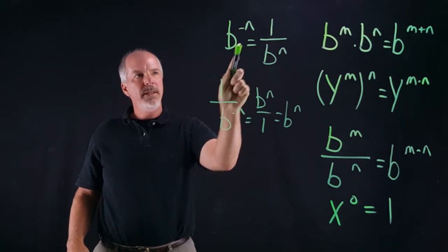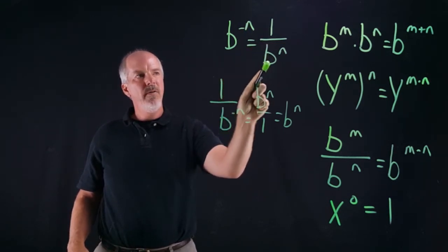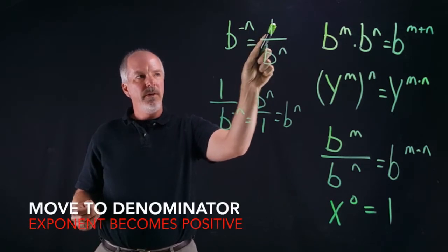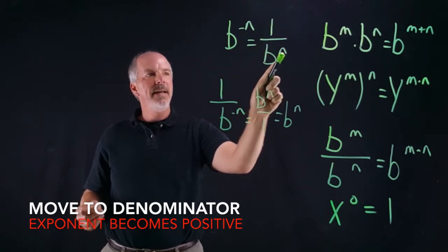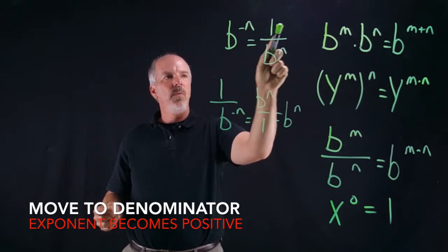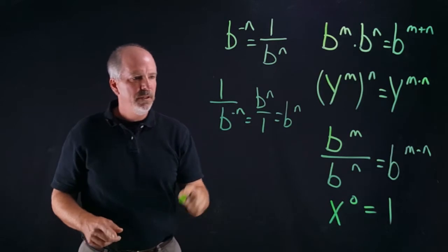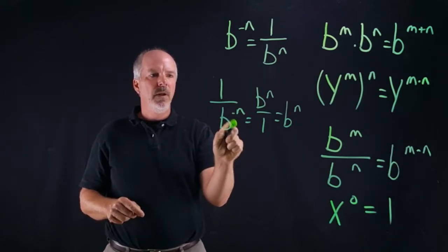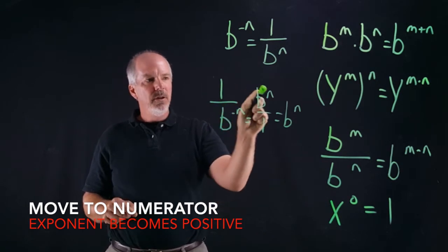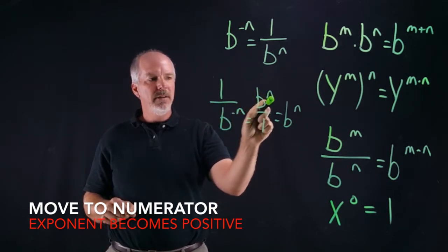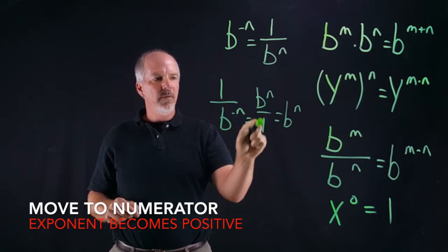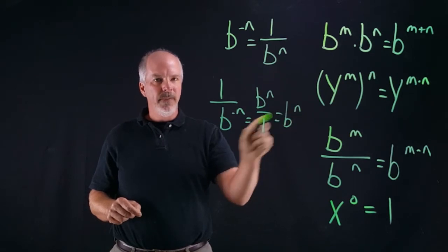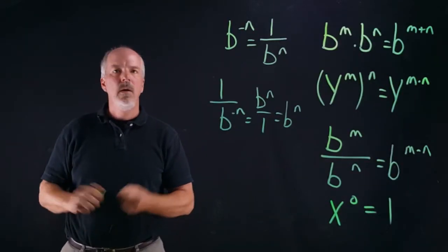Now let's look at when we have a negative exponent. So b to the negative n equals one over b to the n. You're basically taking the reciprocal — putting a one in the numerator, moving b to the negative n into the denominator, and changing the sign to positive. Just the opposite: if it's in the denominator, one over b to the negative n, we move it to the numerator, change it to positive — so one over b to the negative n becomes b to the n.